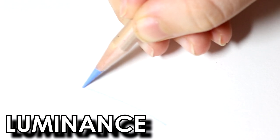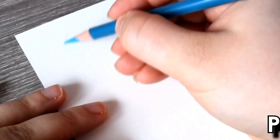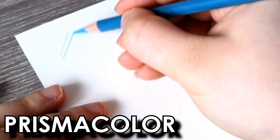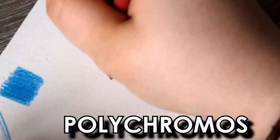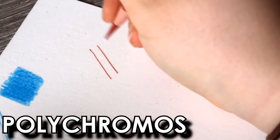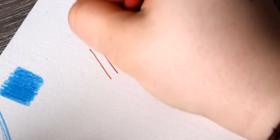Wax pencils do struggle with getting in fine details because they become blunter quicker. As they become blunter, you'll notice the sharp lines become thick and fuzzy, whereas oil pencils stay sharper for longer and maintain crisp and sharp lines and details.